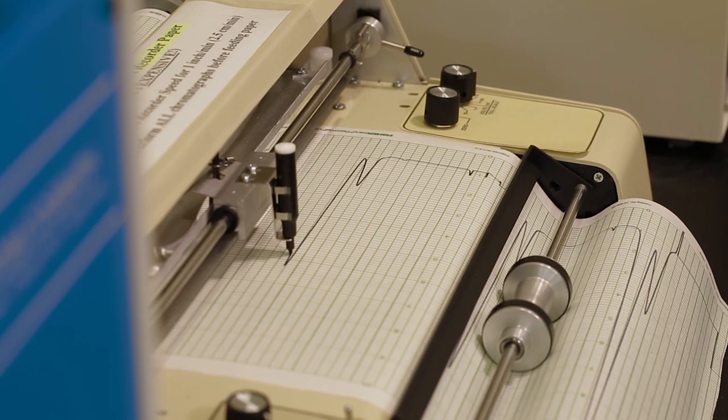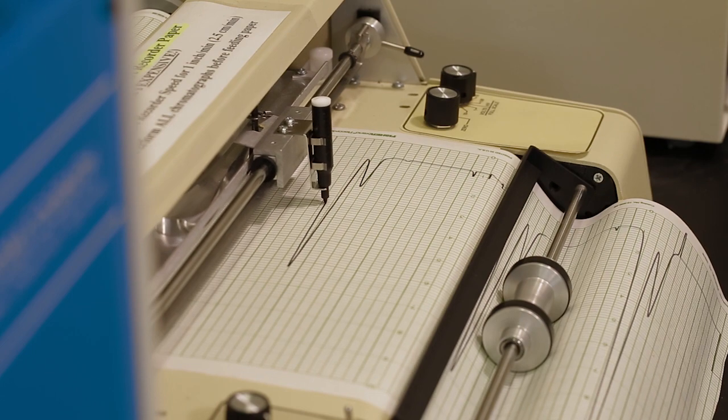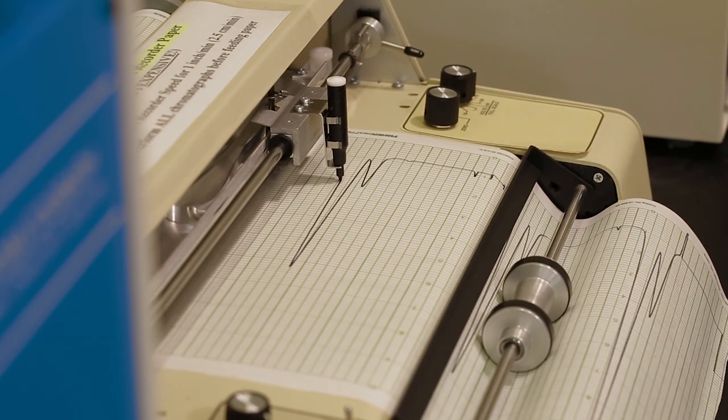While the sample is running, a basic strip chart recorder prints the gas chromatogram. The areas of the peaks are calculated manually.